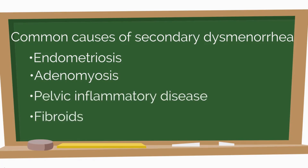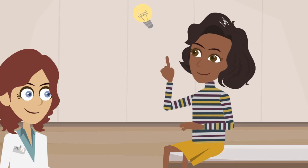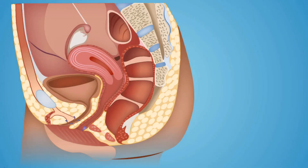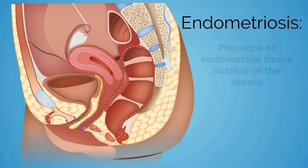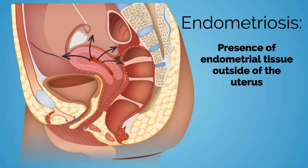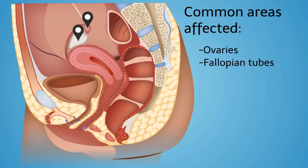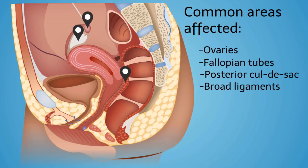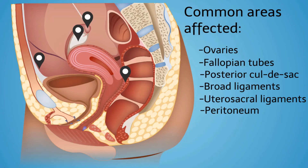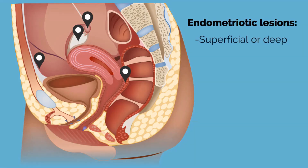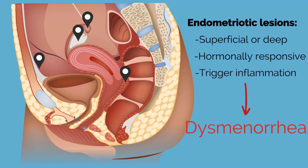Our patient has heard of endometriosis and wants to know more about it. She asks: what is endometriosis? Endometriosis is the presence of endometrial tissue outside of the uterus. Common areas for these endometrial deposits include the ovaries, fallopian tubes, cul-de-sac, broad ligaments, utero-sacral ligaments, and peritoneum. Deposits can be superficial or deeply infiltrating, and are responsive to hormonal stimulation like normal endometrial tissue. These extra-uterine lesions trigger inflammation, leading to dysmenorrhea.